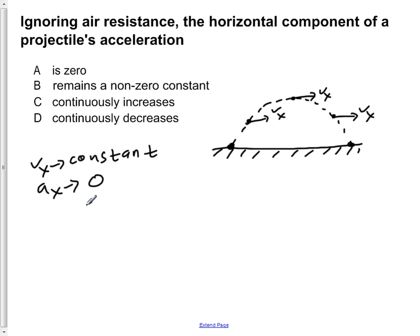It's not a non-zero constant, so B is wrong. It's not increasing because the velocity of our ball in the x direction doesn't change. So the acceleration is not decreasing or increasing. So C and D are wrong. B says it's a non-zero constant. Well, it's zero, so B is wrong.